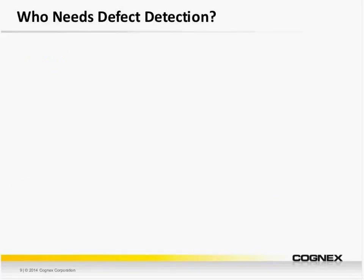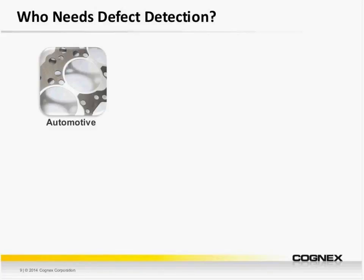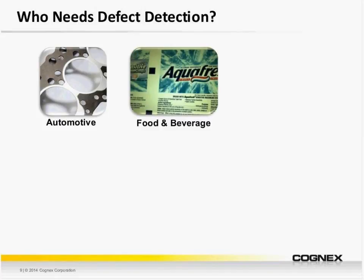So who needs defect detection? We work with companies in a variety of industries. Many applications are found in the automotive industry — the image here shows a gasket, one particular automotive component we've had a lot of success inspecting. Gasket inspection involves placement on an assembly, for example on an engine block, or inspecting for tears. Another common area is the food and beverage industry, both for packaging and, in some cases, for inspecting the food itself.